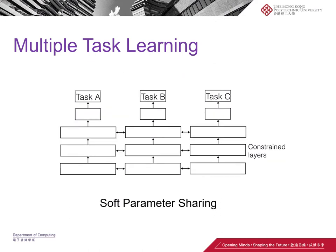Or we can do soft parameter sharing. In that case, we still keep separate main body hidden layers for each task, but during training they share information using some constraint. When training one task, those parameters pass information to neighboring tasks, and that already-trained experience or knowledge is passed to other tasks, reducing their training effort and helping them converge more efficiently.